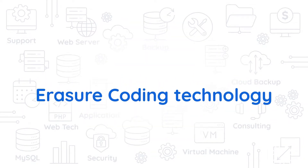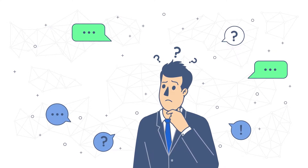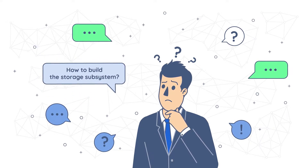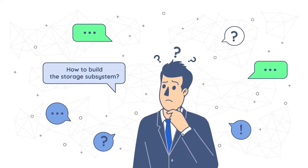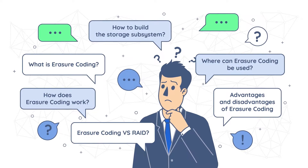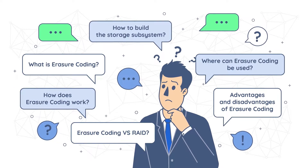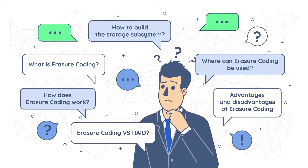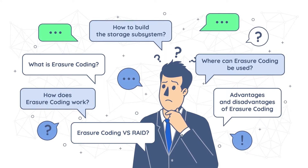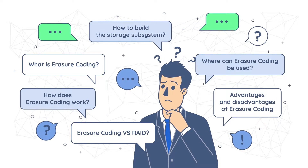Greetings everyone. In this video we're proceeding with the discussion about the methods of storage configuration. To narrow the focus and keep things in line with our previous videos, we'll be talking about the way of building the storage subsystem of an HCI solution called erasure coding technology. Here's a quick plan: first we'll determine what erasure coding technology is and how it works, then make a quick comparison with RAID, look at where erasure coding could be used best, and finally identify the main advantages and disadvantages of erasure coding.